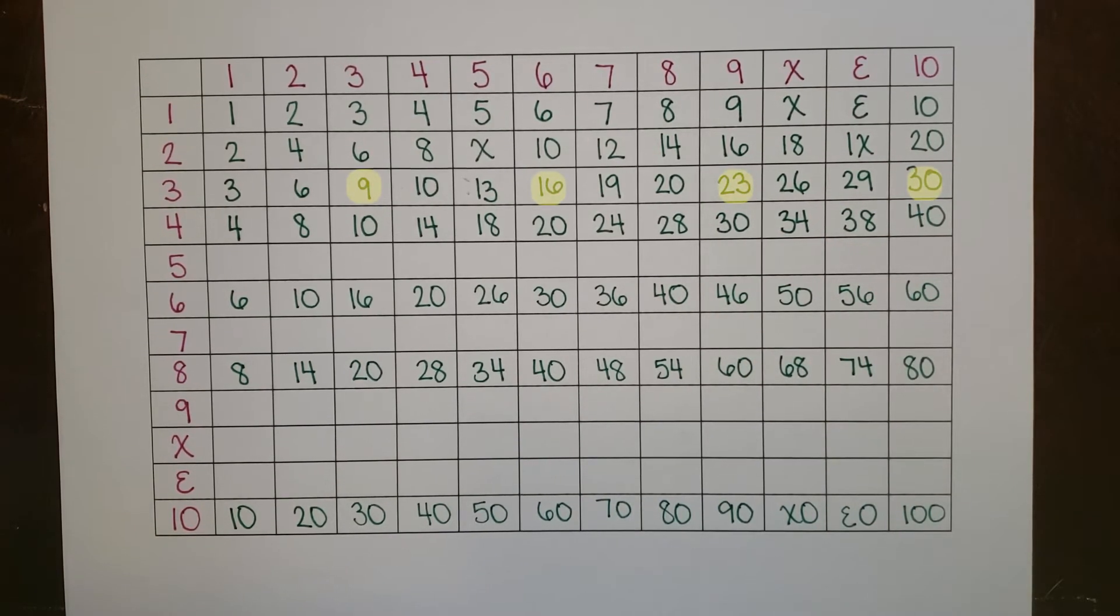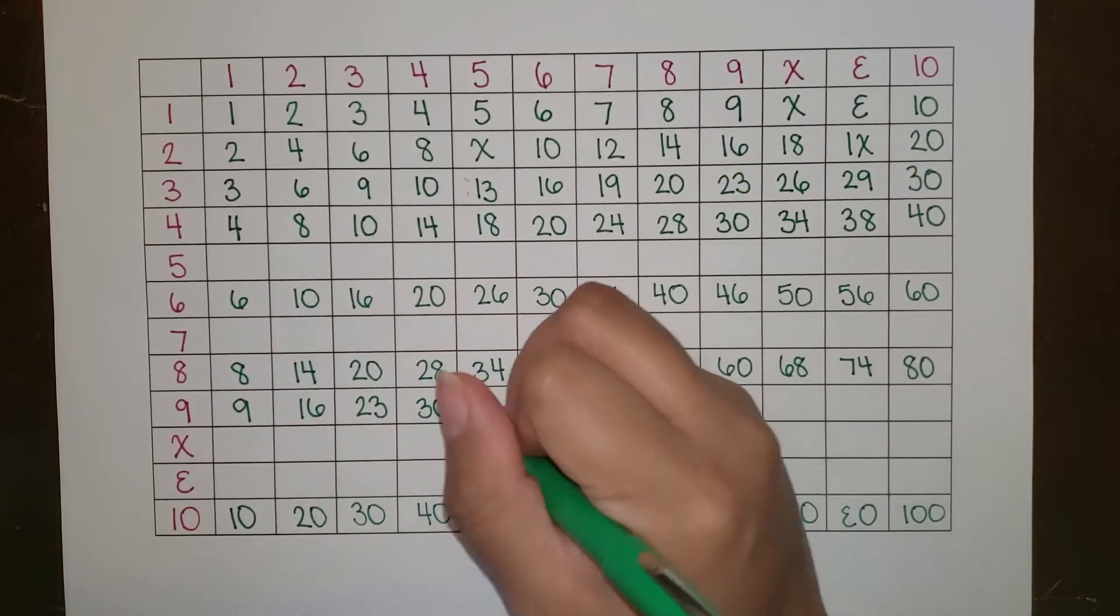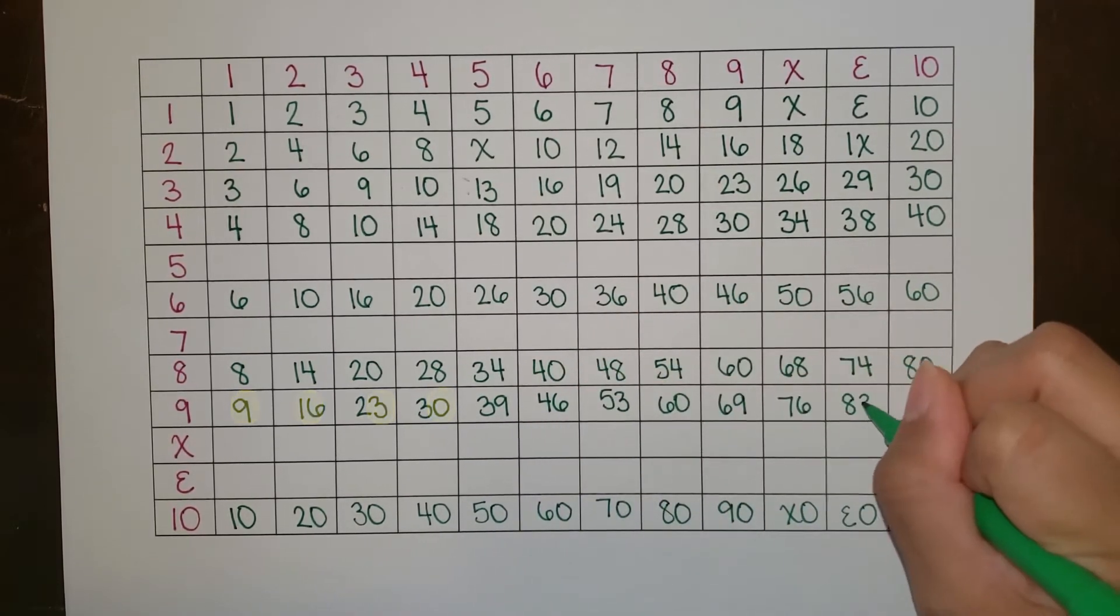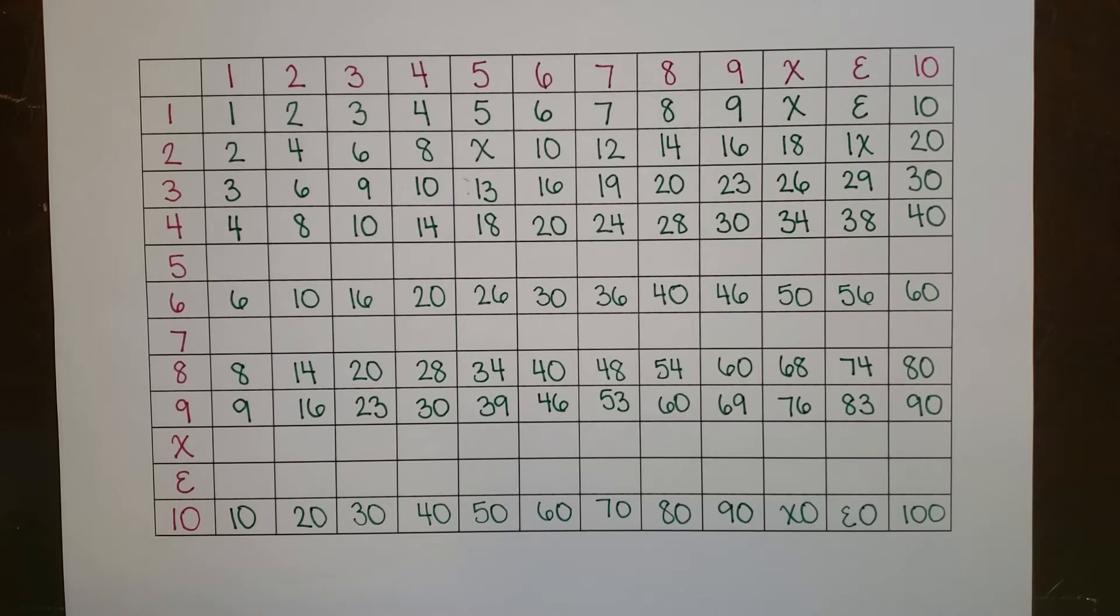If we look at every third number on the row of threes, we see we've already got the first four nines done. And we can see a new pattern emerge: nine, six, three, zero. This is the exact opposite pattern we noticed with the threes.